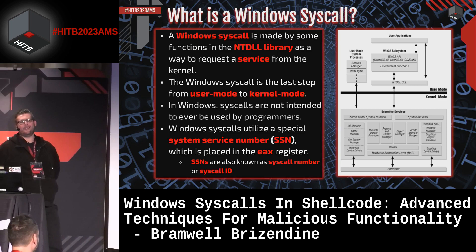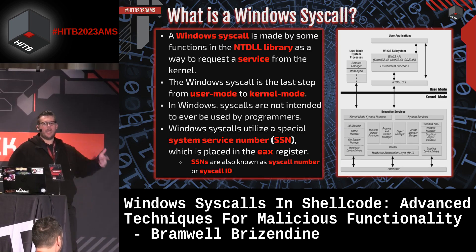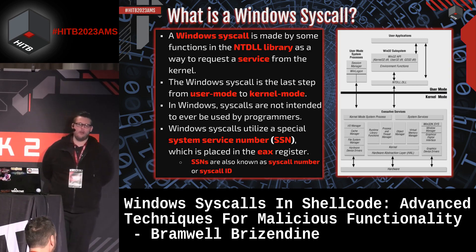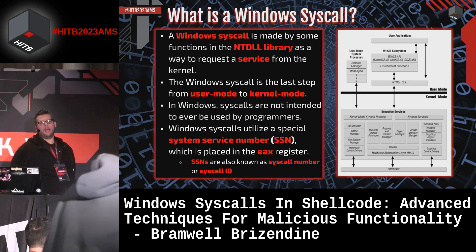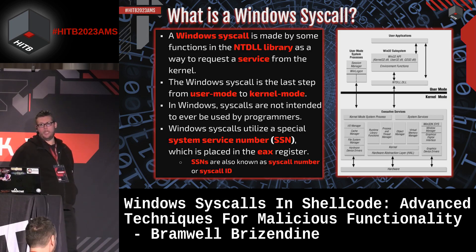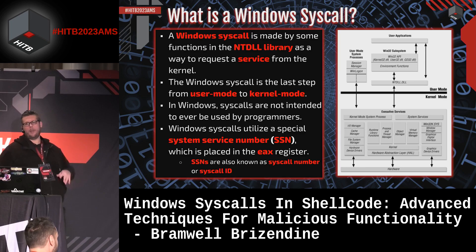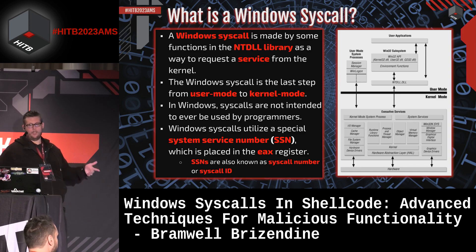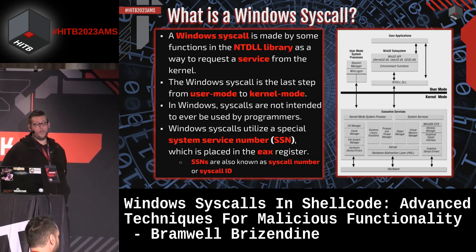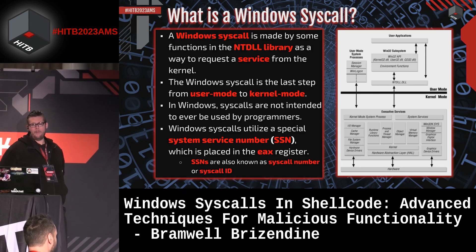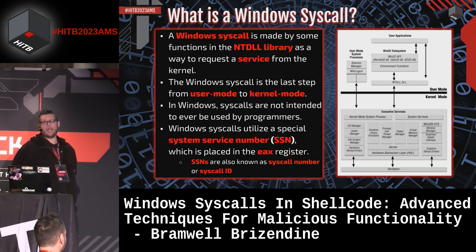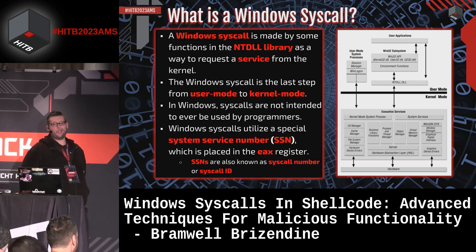We're not going to do the traditional way — we're going to do something called a Windows syscall. Most Windows APIs at some point, directly or indirectly, will call an NTDLL function. Some NTDLL functions have a one-to-one correspondence with a Windows syscall of the same name, and others may call multiple syscalls. The NTDLL function is the last step before we go from user mode to kernel mode. Those NTDLL functions call Windows syscalls using an SSN — a System Service Number — loaded into the EAX register, and that sets the magic in motion.